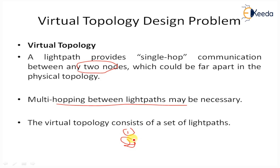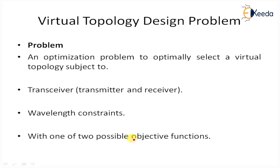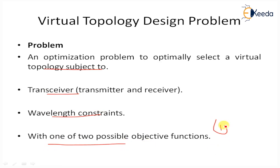Light paths in the virtual topology use RWA techniques. The problem is an optimization problem to optimally select a virtual topology subject to transceiver (transmitter and receiver) and wavelength constraints, with one or two possible objective functions: first, given a traffic matrix, minimize the network-wide average packet delay; second, maximize the scale factor by which the traffic matrix can be scaled up.